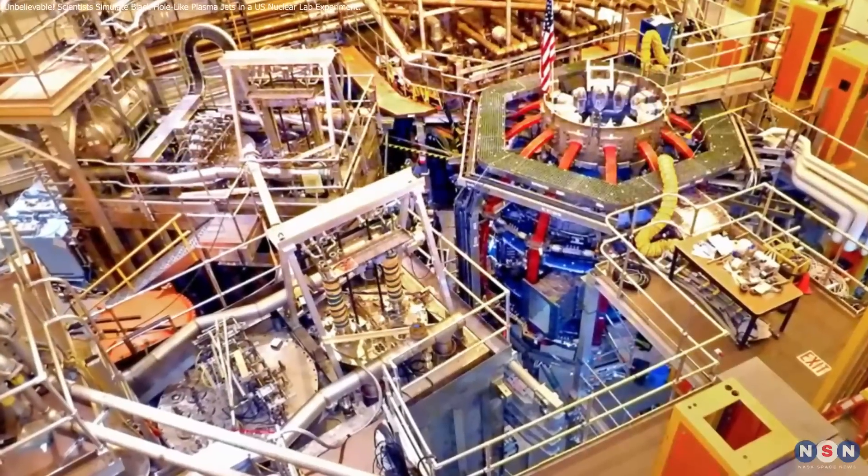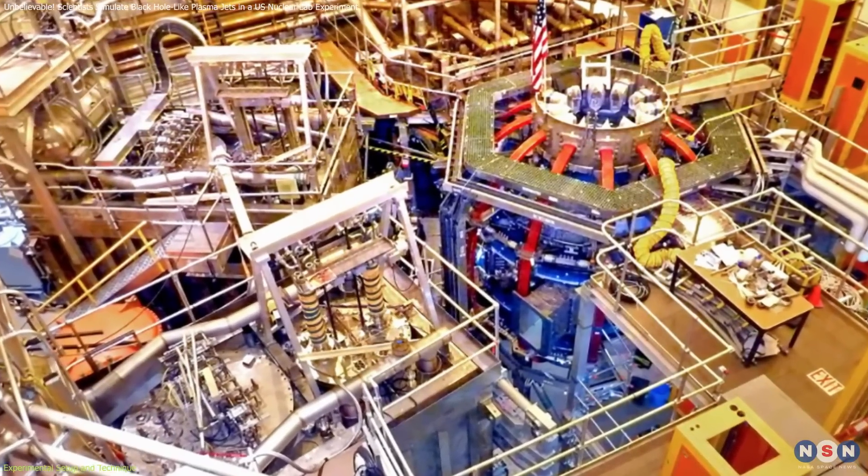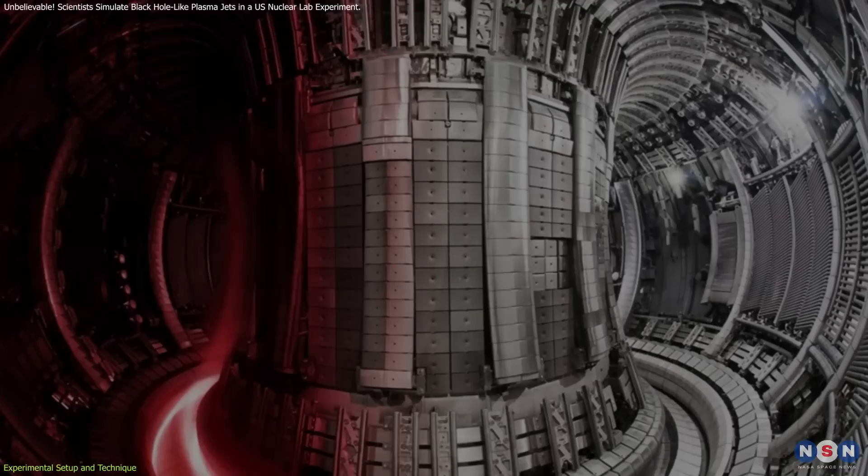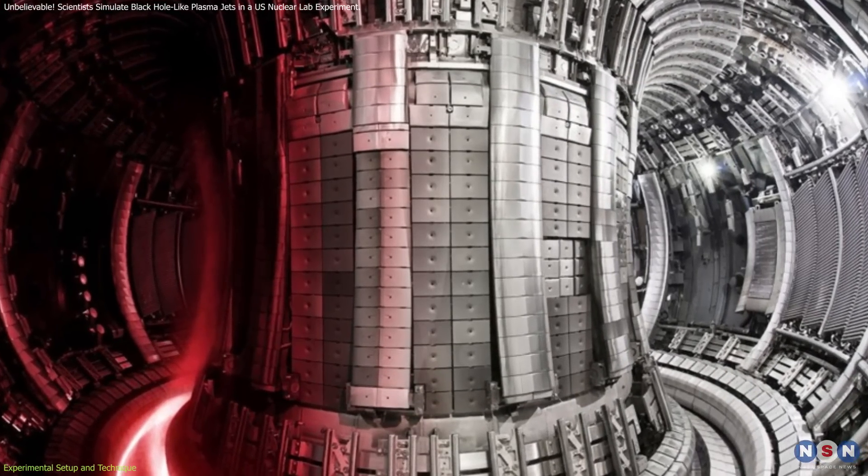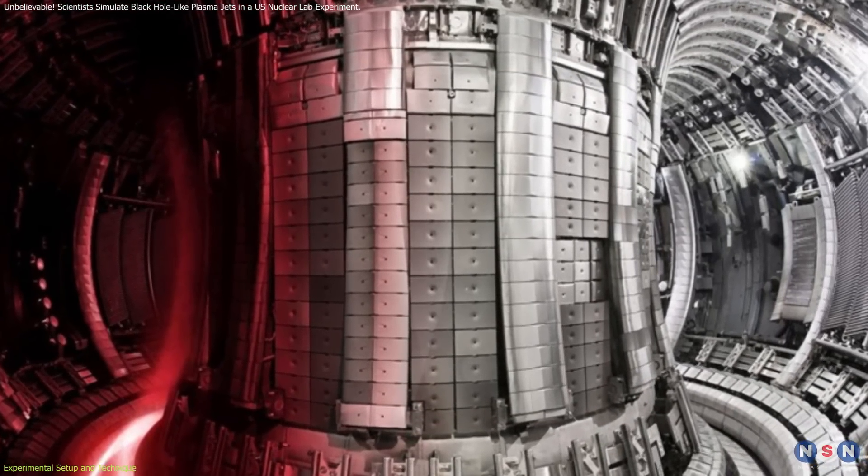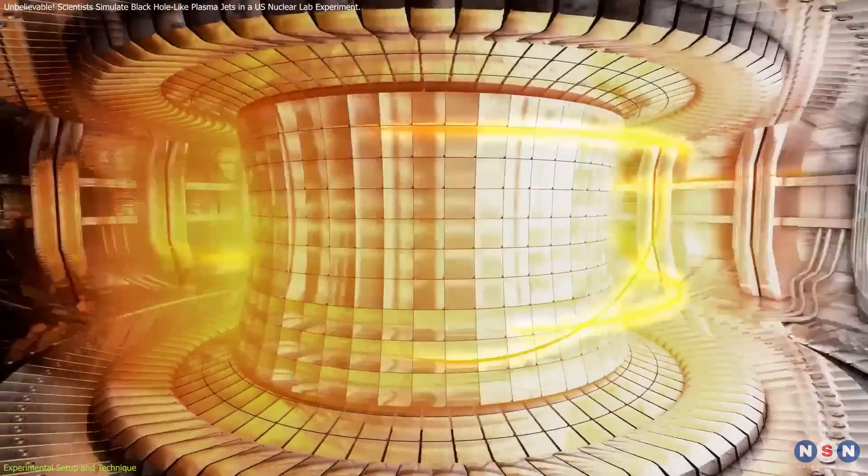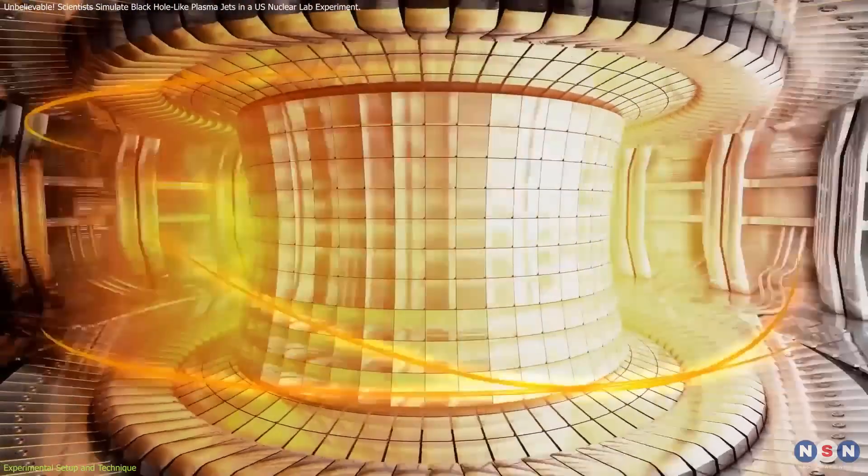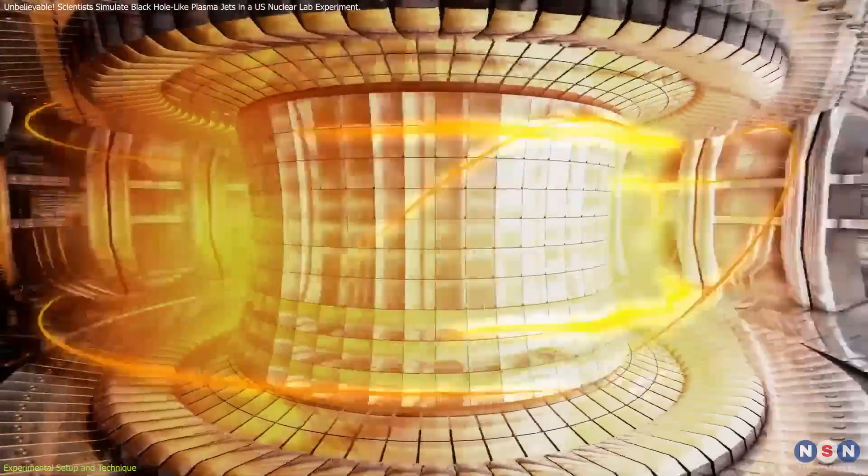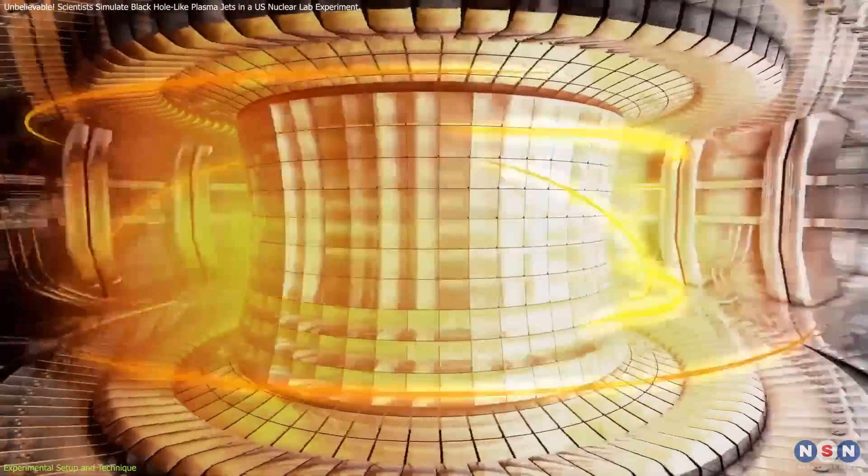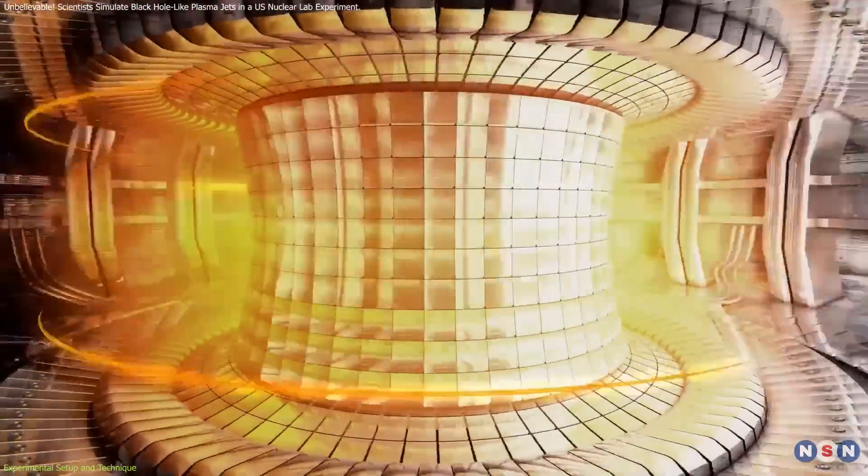Scientists at the Princeton Plasma Physics Laboratory, Triple PL, used a special fusion device called a tokamak to study plasma jets similar to those formed around black holes. A tokamak, shaped like a donut, uses strong magnetic fields to contain plasma, which is an extremely hot, electrically charged gas.